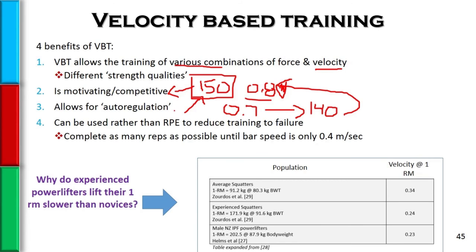Another use of VBT is monitoring proximity to failure. We've discussed pros and cons of training to failure and using an RPE of eight — staying two reps shy of failure. There are correlations between bar speed and proximity to failure. For example, I might program three sets of six but instruct the athlete to stop when they hit 0.4 meters per second, because that speed indicates they're getting close to failure without actually reaching it.